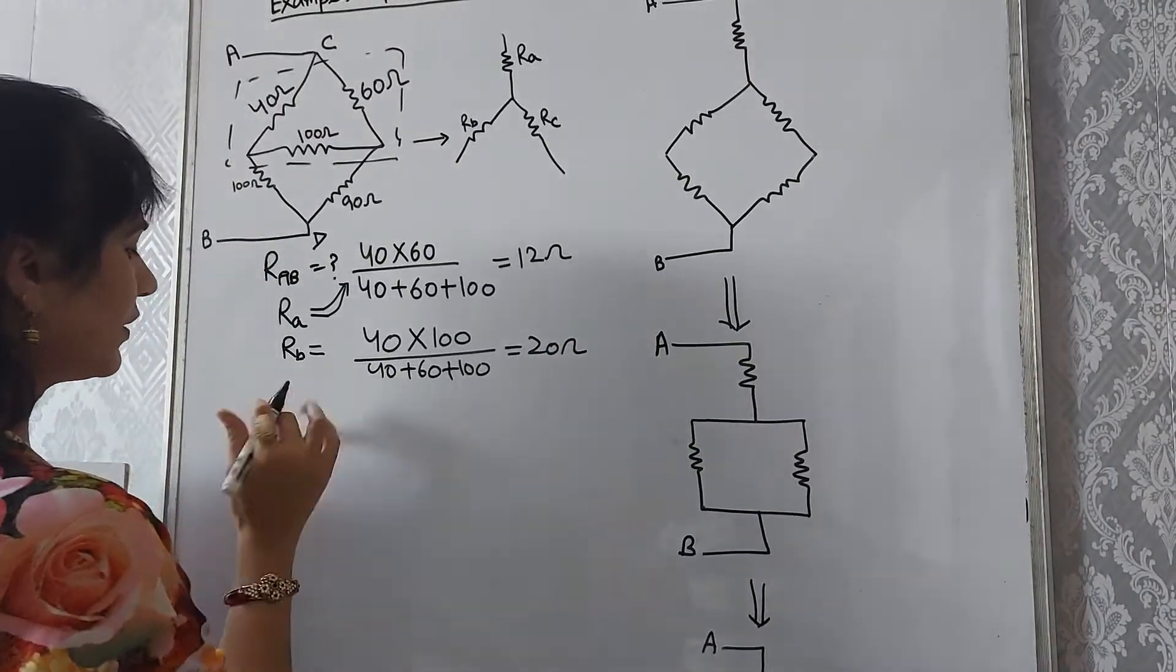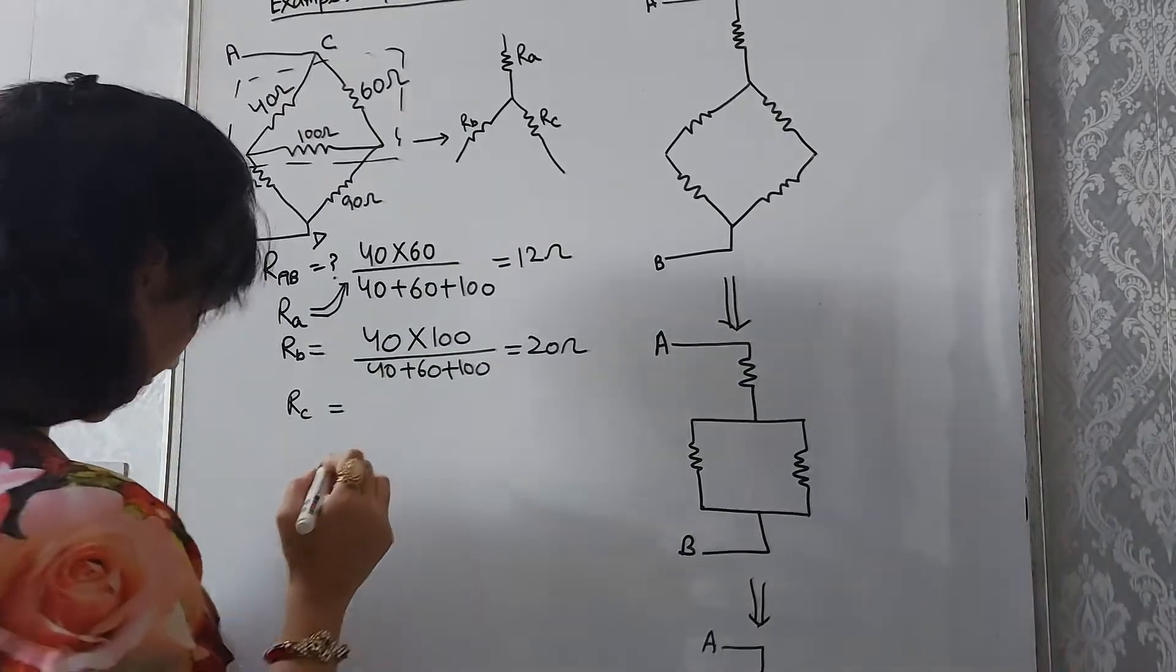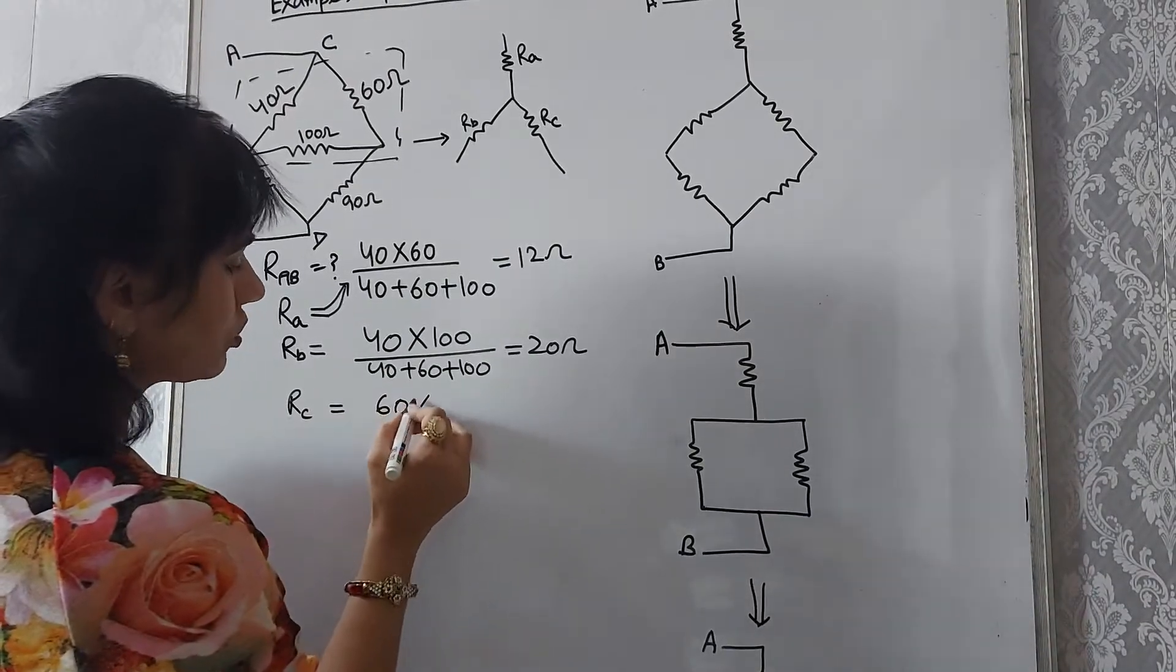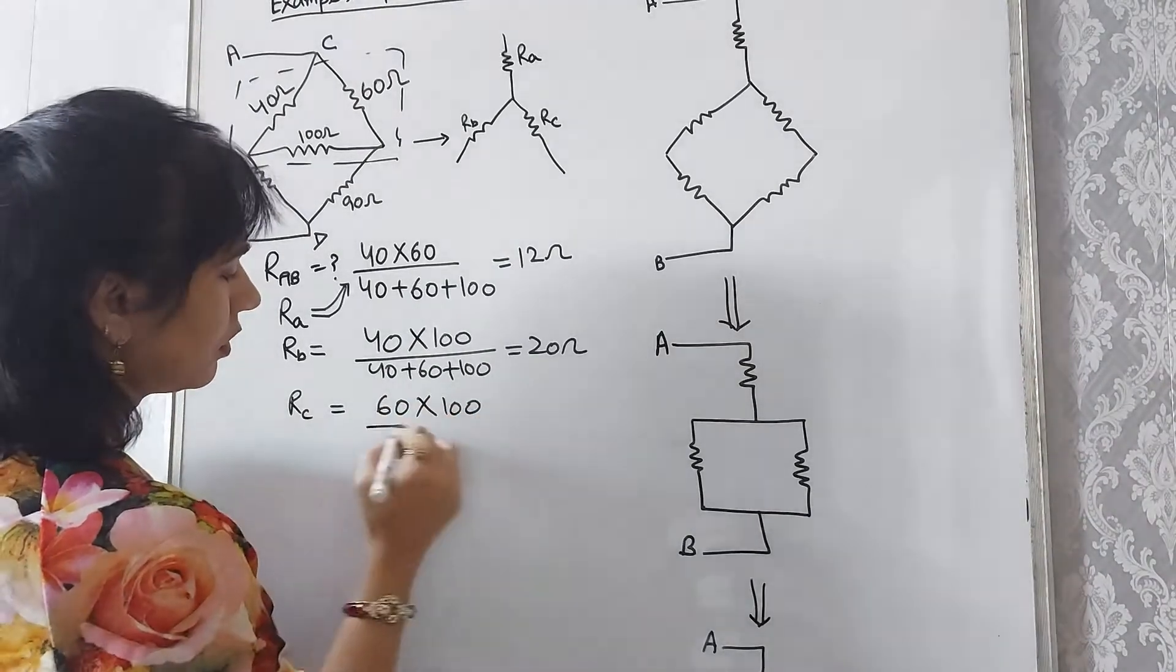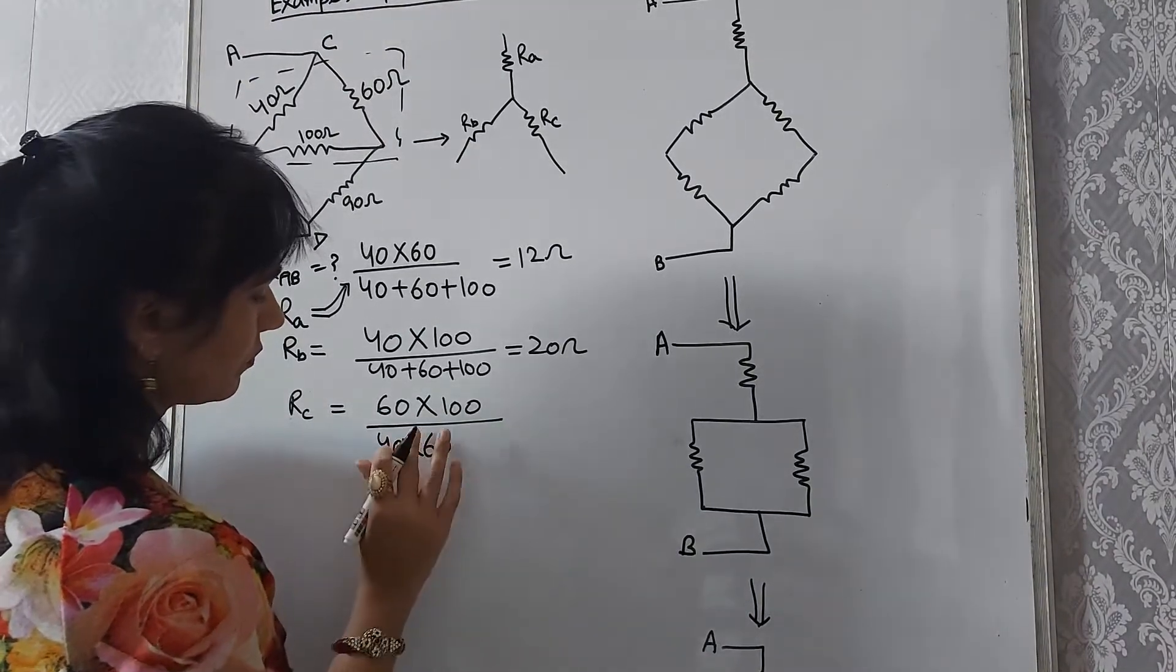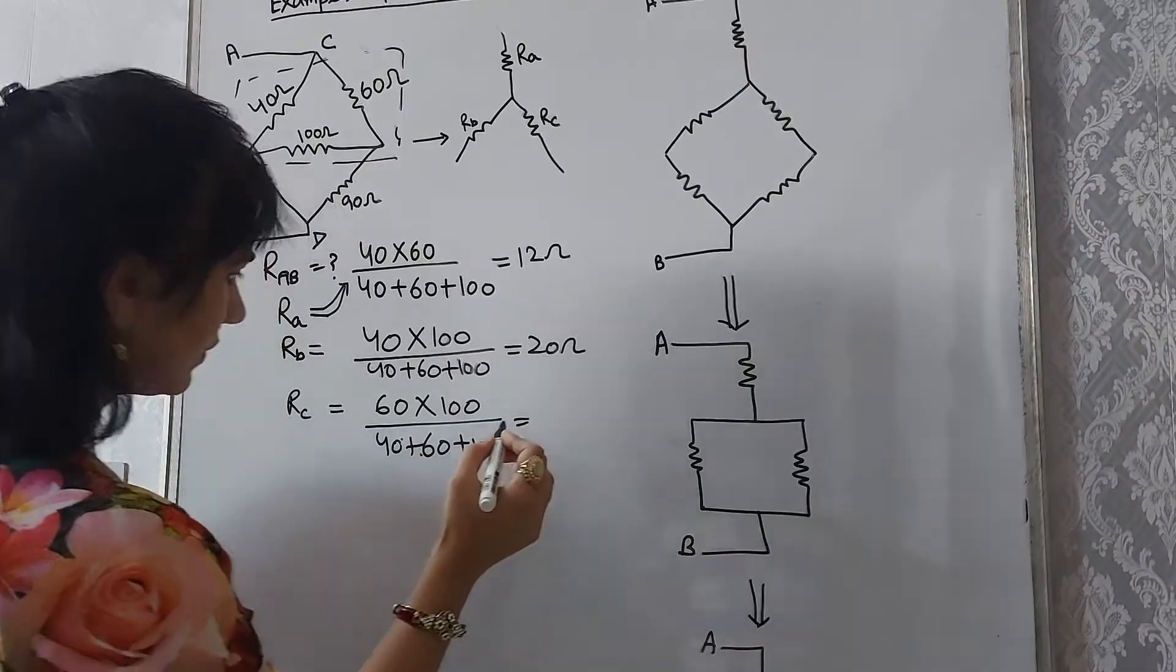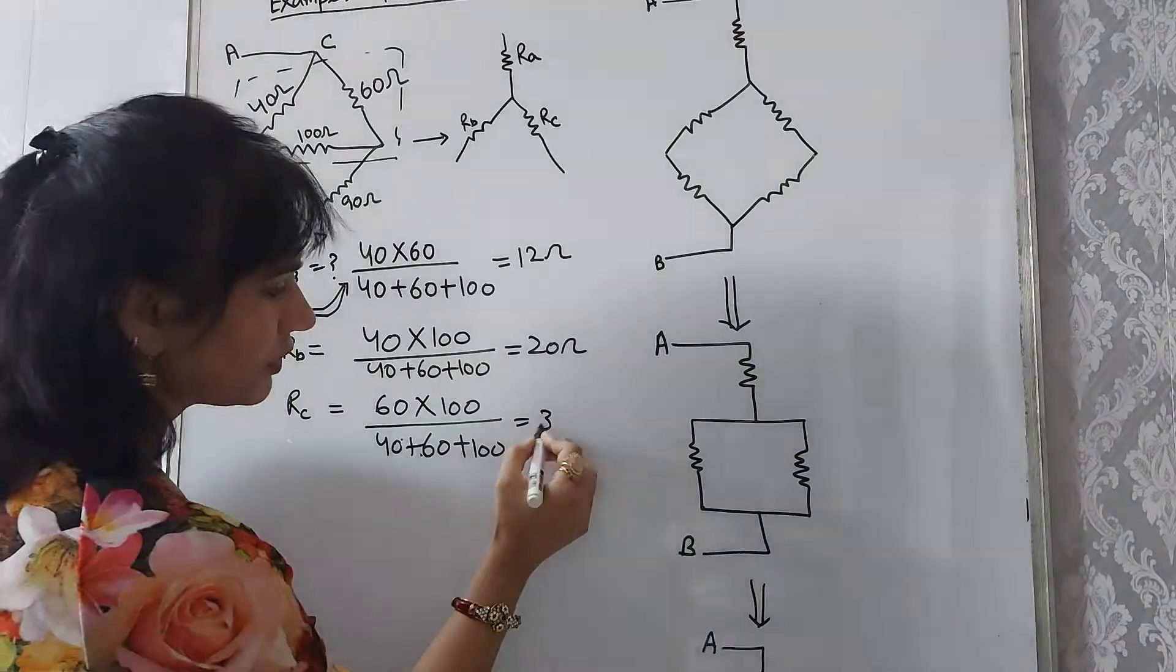Similarly, we find Rc. Rc is equals to 60 into 100 upon total resistance. So this is equals to 30 ohm.